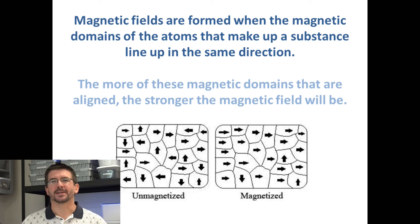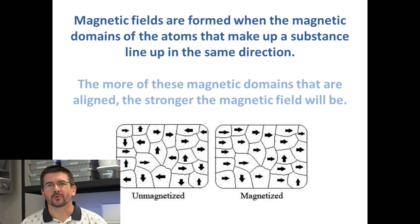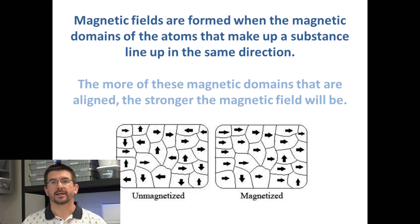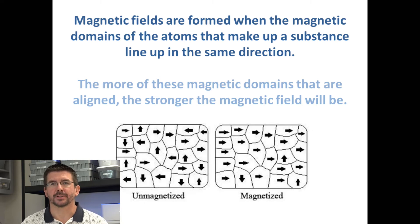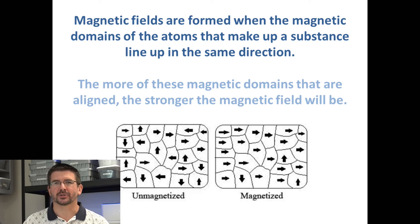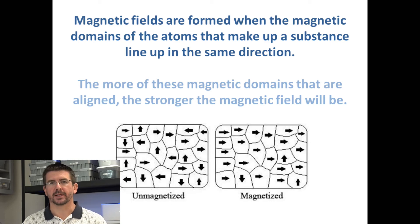When these electrons and these magnetic fields line up, we call this a magnetic domain. The more atoms and electrons that are lined up consistently in the same direction, the stronger and more powerful the magnetic field that's generated will be. If just a majority of them are lined up in one direction, that creates a weaker magnetic field than if they were all lined up consistently in one direction.